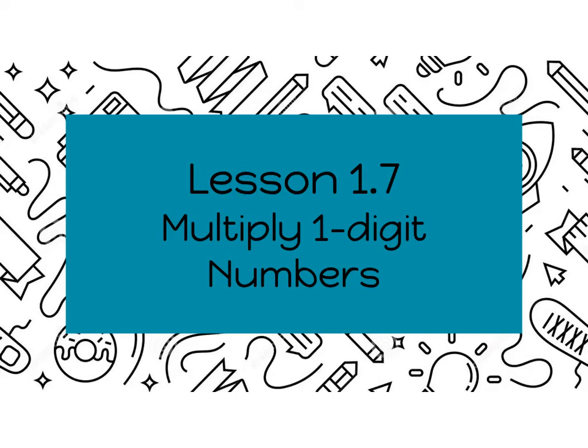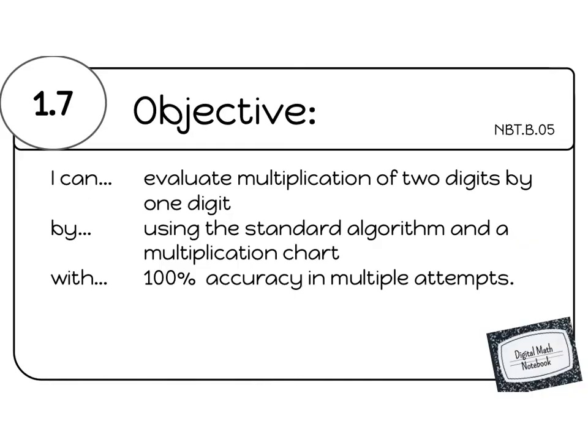Hello fifth graders, welcome to lesson 1.7: multiply one-digit numbers. Let's get started. Today's lesson objective is I can evaluate multiplication of two digits by one digit using the standard algorithm and a multiplication chart with 100% accuracy in multiple attempts. Remember that the objective needs to be written in your digital math notebook, so pause to do that now.